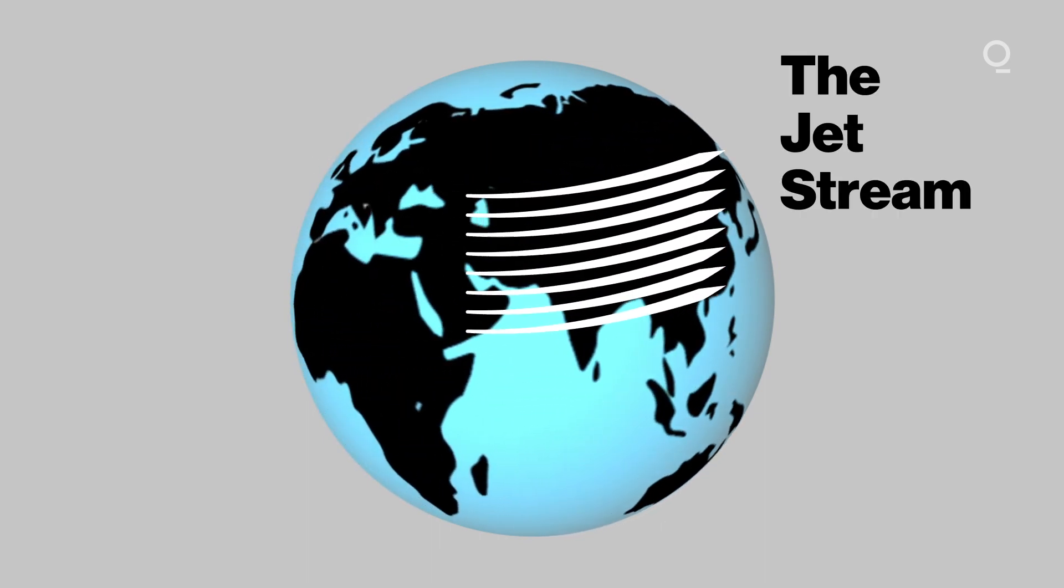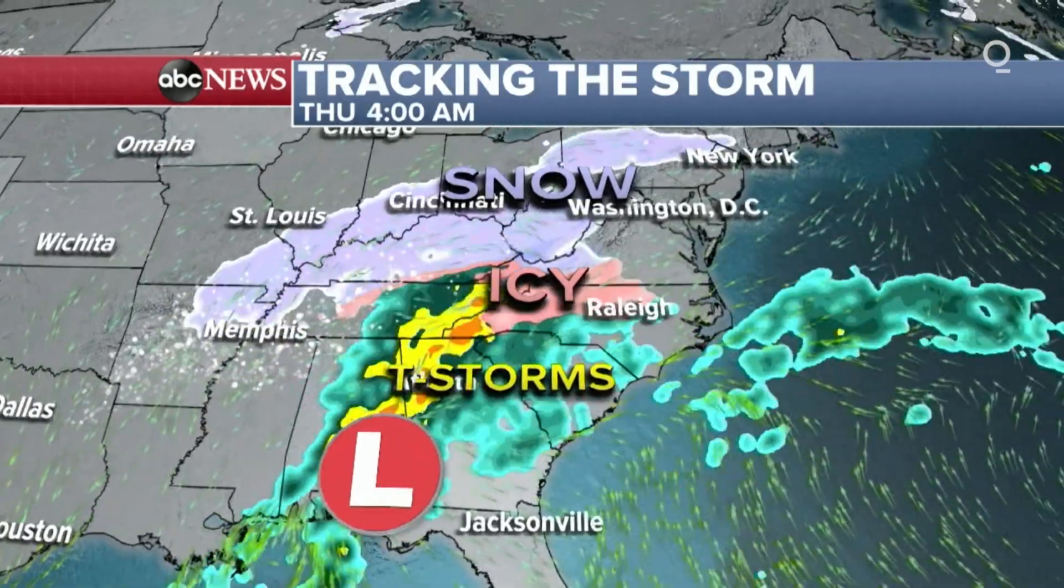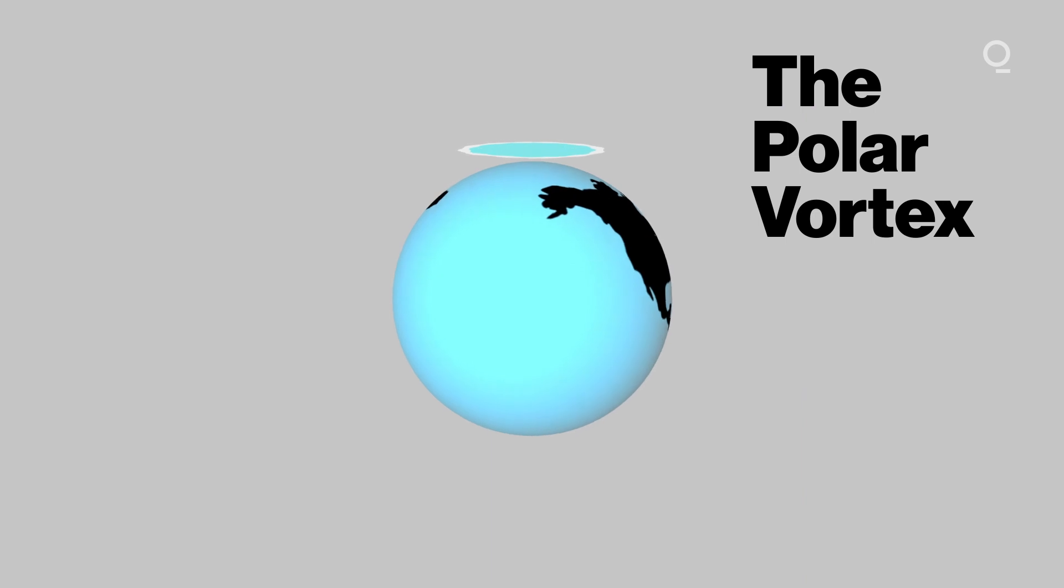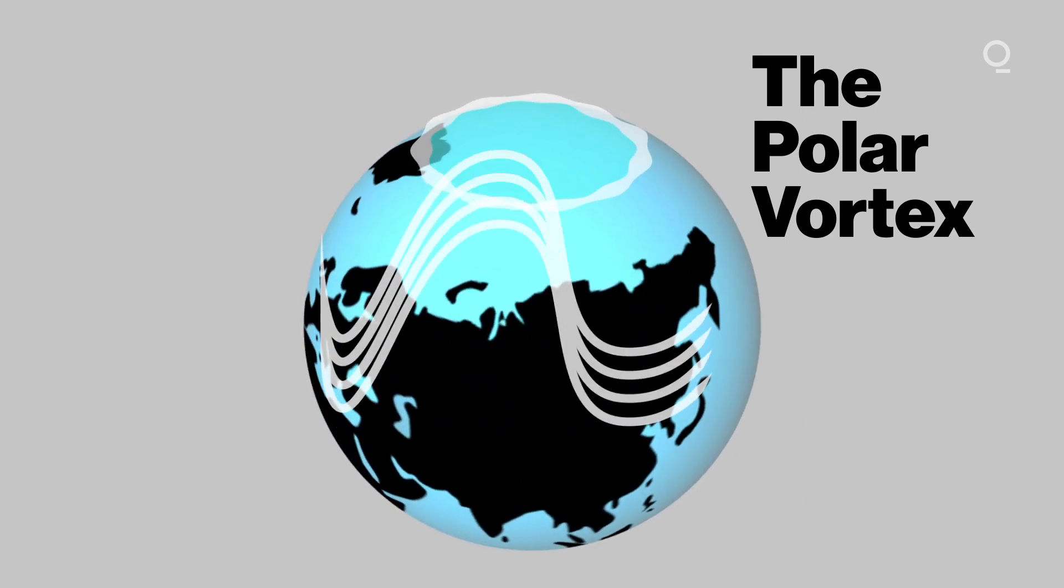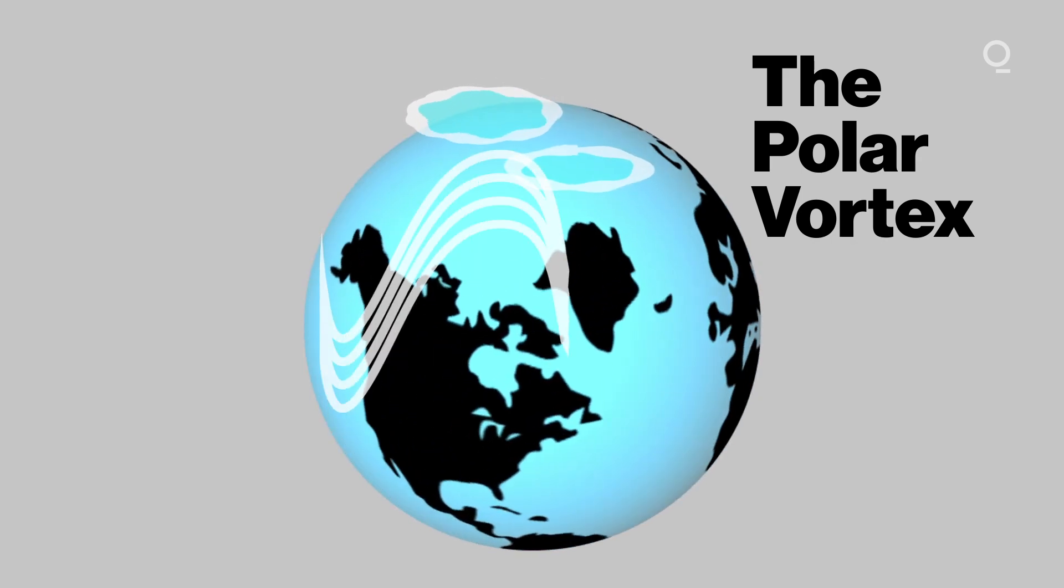When the jet stream becomes very wavy, taking these big northward swings and southward dips, that wave energy can travel upward and start poking the stratospheric polar vortex. You can think of the polar vortex as a spinning top. And if you start poking at a spinning top, eventually that top is going to fall off its spindle. In this particular case, it made it split. And when that happens, we know that we're going to get some crazy weather.